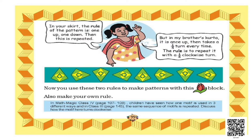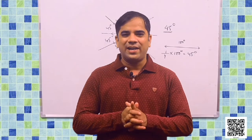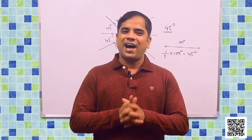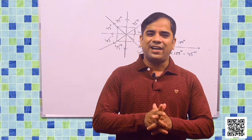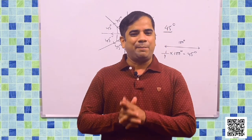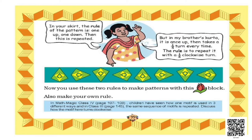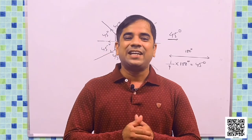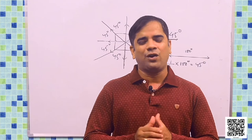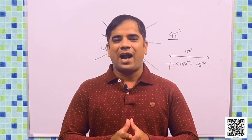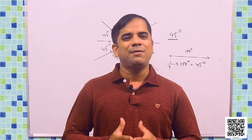So students, now you use these two rules: one up and one down and repeat it again and again; and the other is one-fourth turn clockwise and repeat it again and again. So you can use these two rules to make patterns with the flower block. Also make your own rule — you can rotate the blocks one-half. As it is being rotated one-fourth, you can rotate it one-half and make your own rule and pattern.